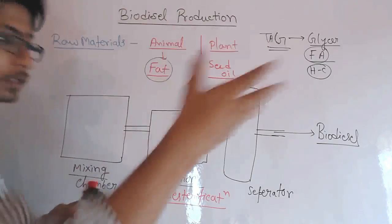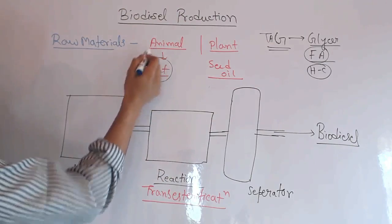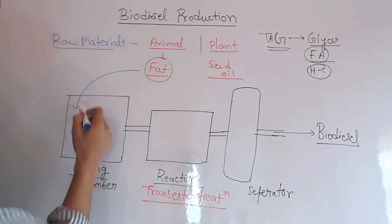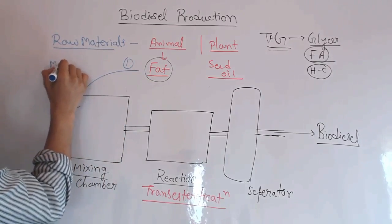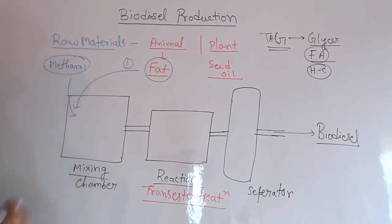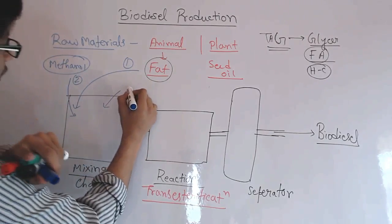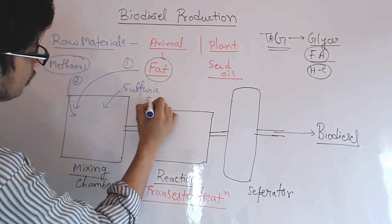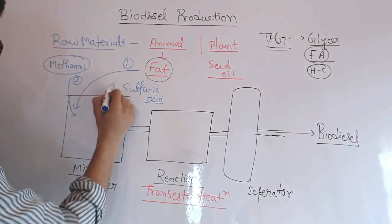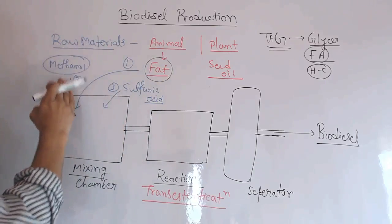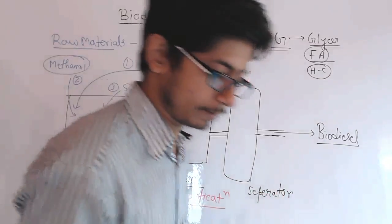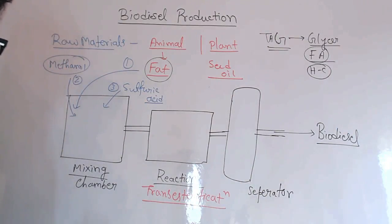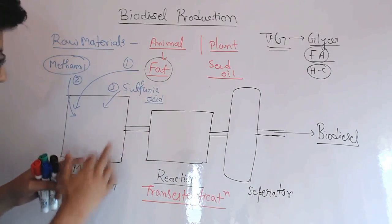Now let's begin with the process itself. The first step is the addition of raw materials into the mixing chamber. In the mixing chamber we first add the fat, then we add methanol, and we also add sulfuric acid. Sulfuric acid helps the methanol and the fat to mix with each other very well. So fat, methanol, and sulfuric acid are all added together — this is the first step of mixing everything in the first chamber.